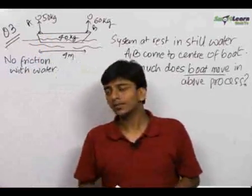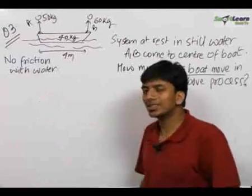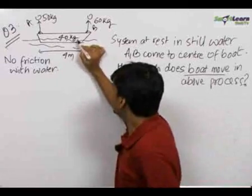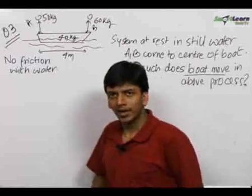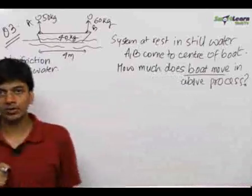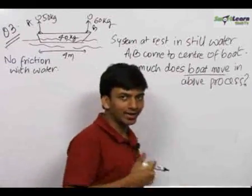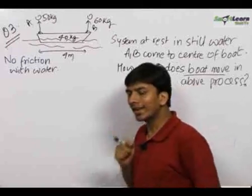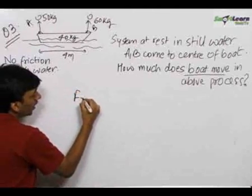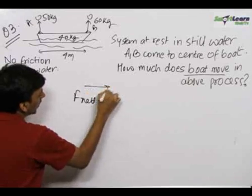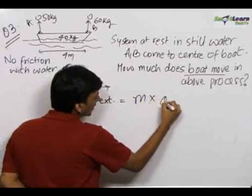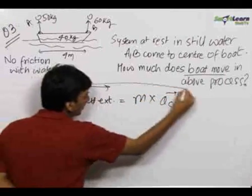The first thing that should come to your mind is that this question will be solved by the concept of centre of mass. If you take the 40 kg boat and the two men as a system, there is no external force acting on the system in the horizontal direction. So the net external force on the system in the horizontal direction is 0. When net external force is 0, the acceleration of the centre of mass is 0, because F_net = M × a_cm. This formula is always true.